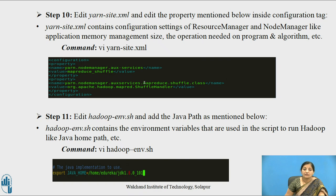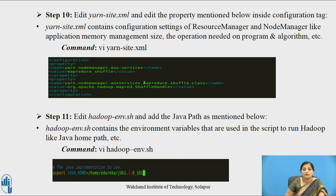Then we move to edit yarn-site.xml and edit the property inside the configuration tag as shown. This file contains configuration settings of the resource manager and node manager, like application memory management size, the operation needed on the program and algorithm, etc. Then we edit hadoop-env.sh and add the Java path as shown. This file contains environment variables used in the script to run Hadoop, like the JAVA_HOME path.